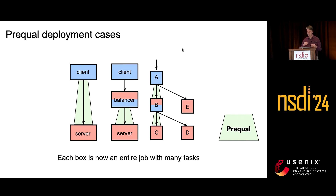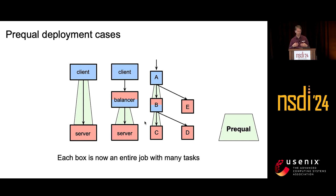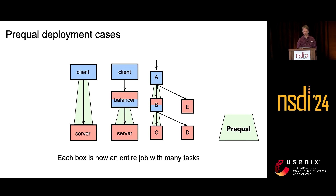We can deploy Prequel in a number of different ways. One is directly embedded as a client library talking to a server. Another use case is putting it into a balancer job — so if clients are sending queries across data centers, you put a balancer inside the destination data center for local latencies on the probes. You can also deploy this load balancer at multiple points in a complicated tree of services. It doesn't have to be everywhere — you can choose particularly impactful servers.